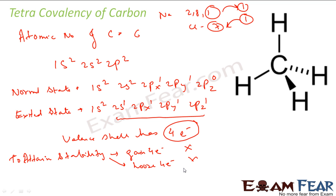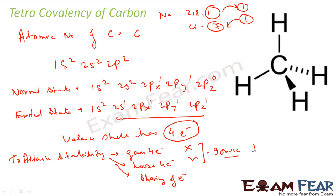So the third option is the sharing of electrons. Sharing is possible — one from this atom, one from another — that is possible. Gaining and losing is not possible, and since gaining and losing involves ionic bond, carbon will not have an ionic bond. But sharing is possible, so carbon will have a covalent bond.